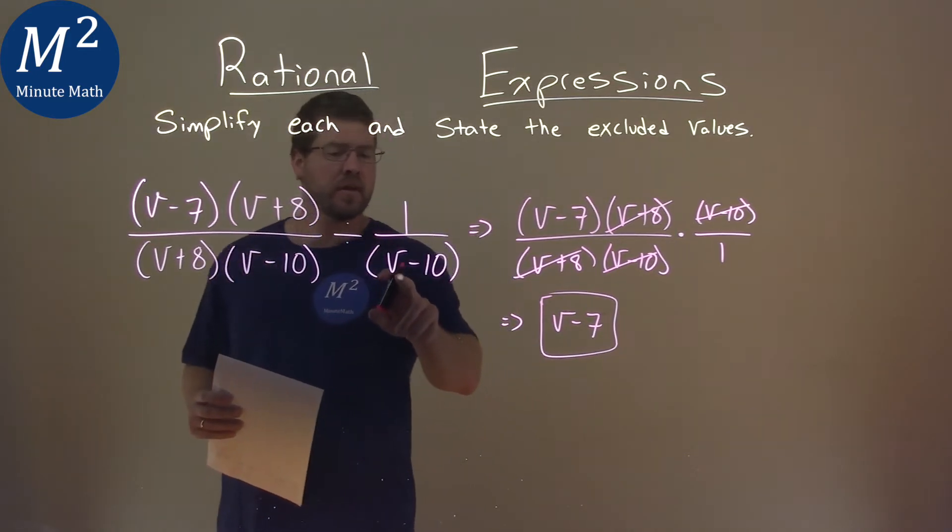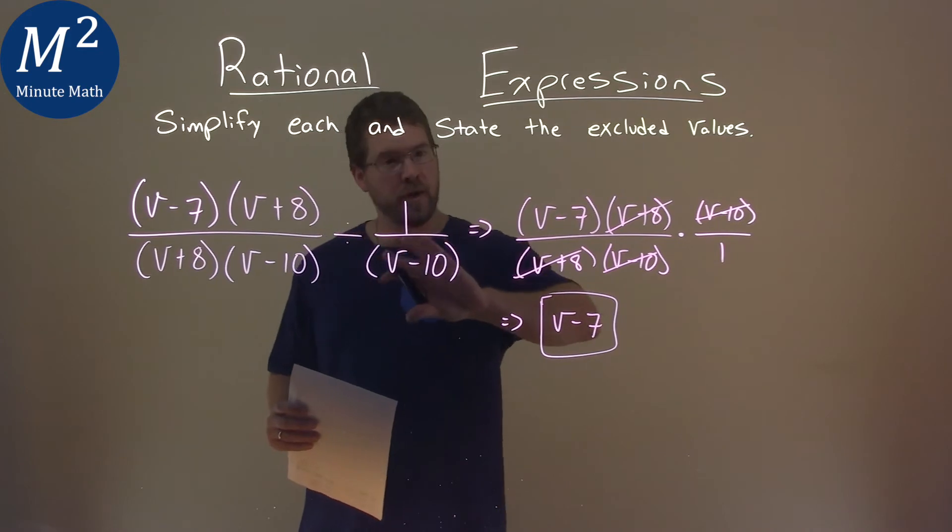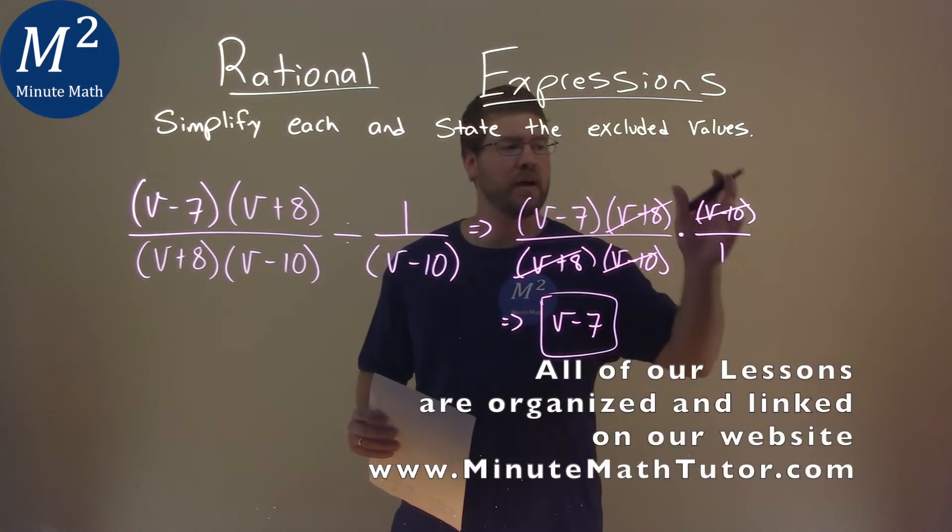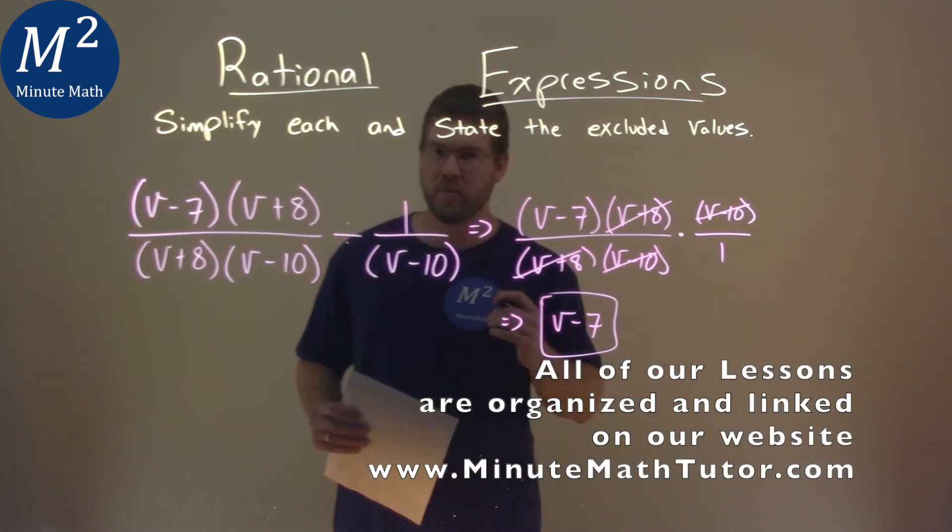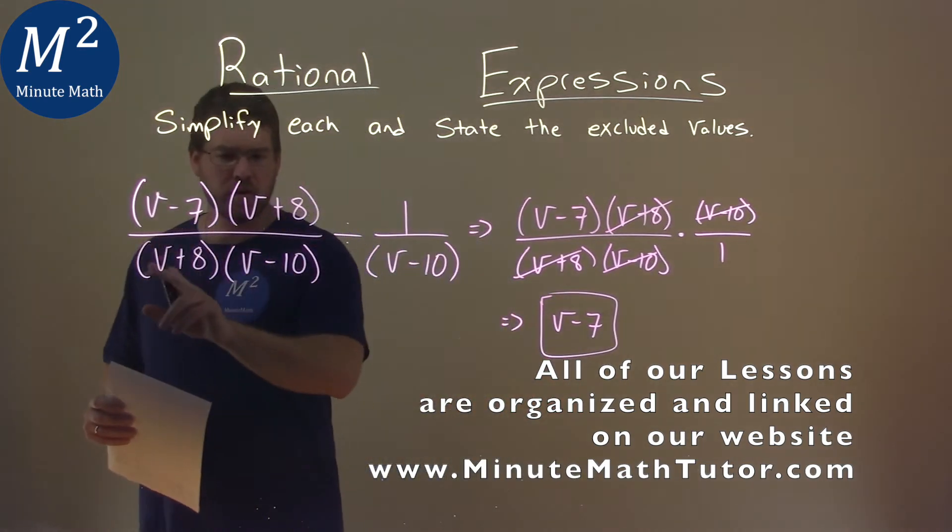Be careful with this v minus 10 here, because that actually, when we're dividing it, flips up, and we can have a 0 in the numerator. That's fine.